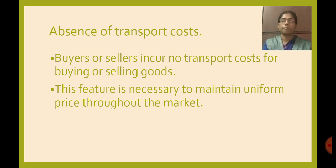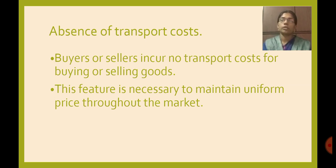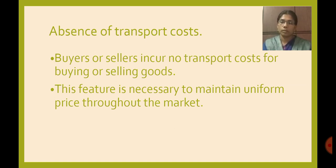The last feature is absence of transportation cost. In a perfect competition market, commodity prices do not include transportation cost. This feature exists because perfect competition market commodities are always available at the same price — there is price uniformity across all markets in the economy. To maintain this uniformity, transportation cost must not be added to the price.